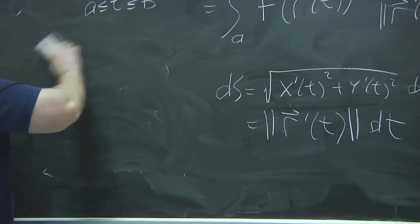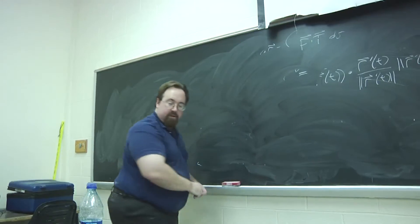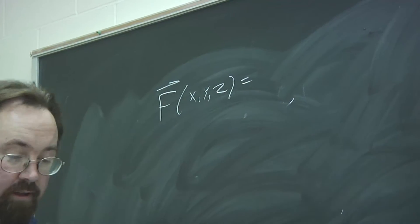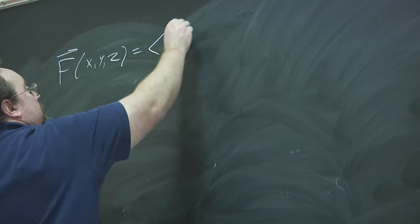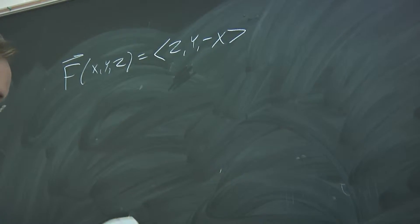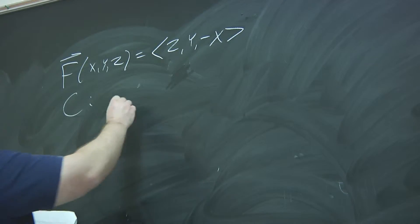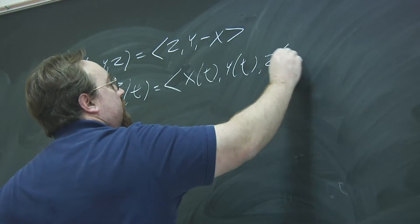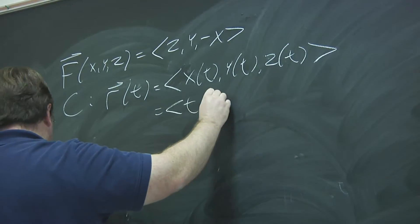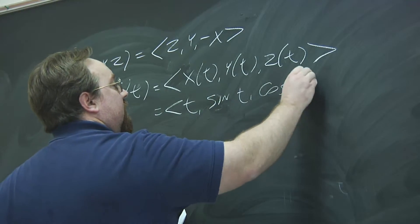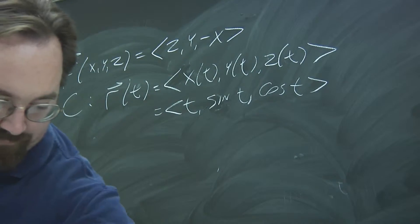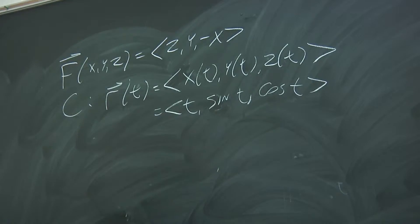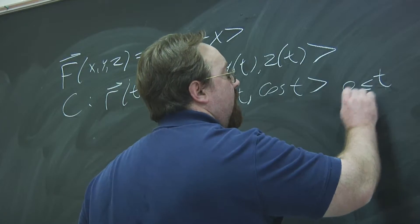So, let's do an example of this. If you're given a vector field, f of x, y, z, it would be z, y, minus x. And the curve that you have is defined by this function r of t, which has components x of t, y of t, z of t. That's going to be equal to t, sine t, and cosine t. So what are you going to do? Oh, this is for t between 0 and pi. That's where your limits come from.